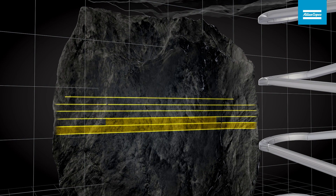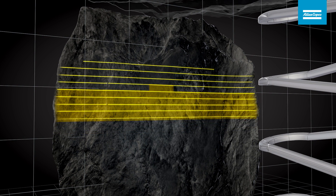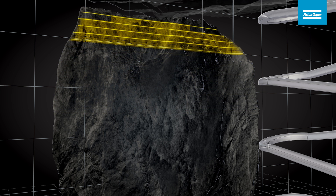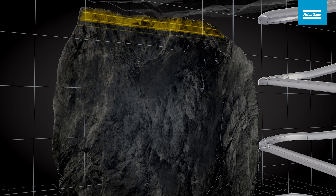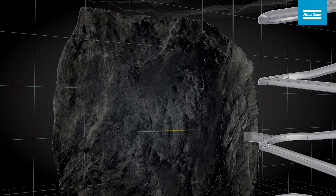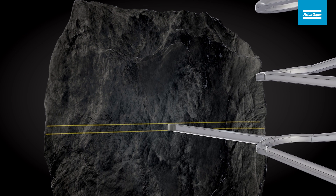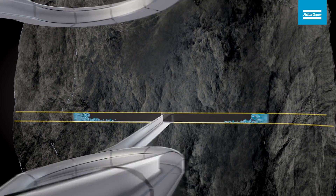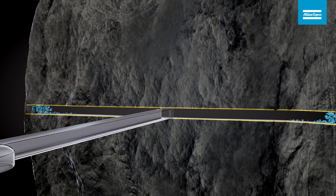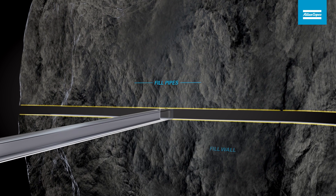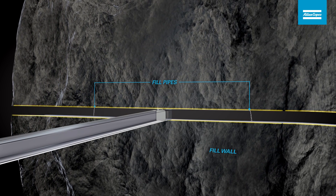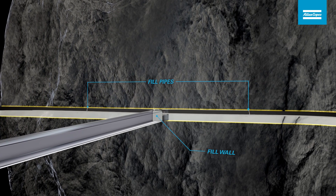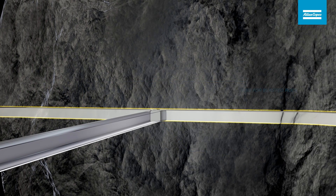Mining is carried out in horizontal slices along the ore body, where the bottom slice is mined first. The excavated area is then backfilled and production continues upwards. Each production level is accomplished by drifting until the entire slice has been mined. The slice is then backfilled and the fill becomes the working platform from which the next level is mined.